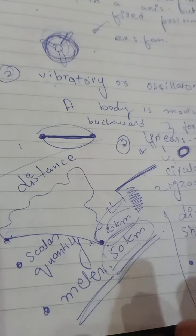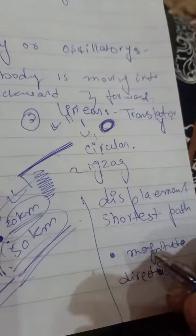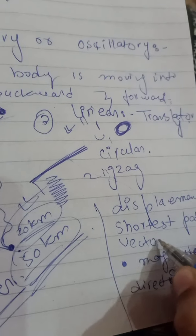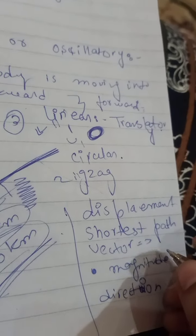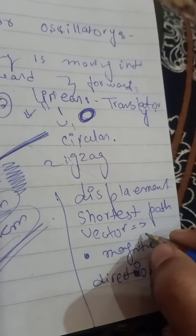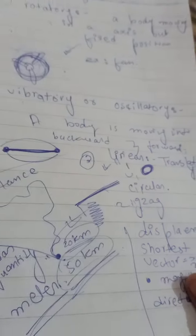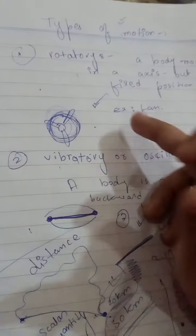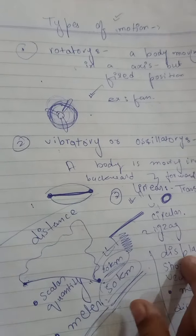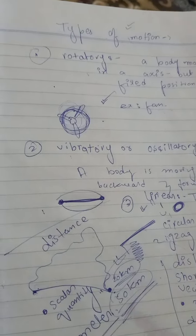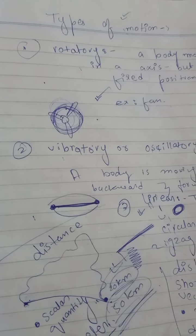So from one point to another, that shortest path is called displacement, while distance does not tell us the direction. Displacement is a vector quantity, and the unit of displacement is also the meter. Today we covered the types of motion and the difference between distance and displacement. In the next video, we will talk about speed and the types of speed.